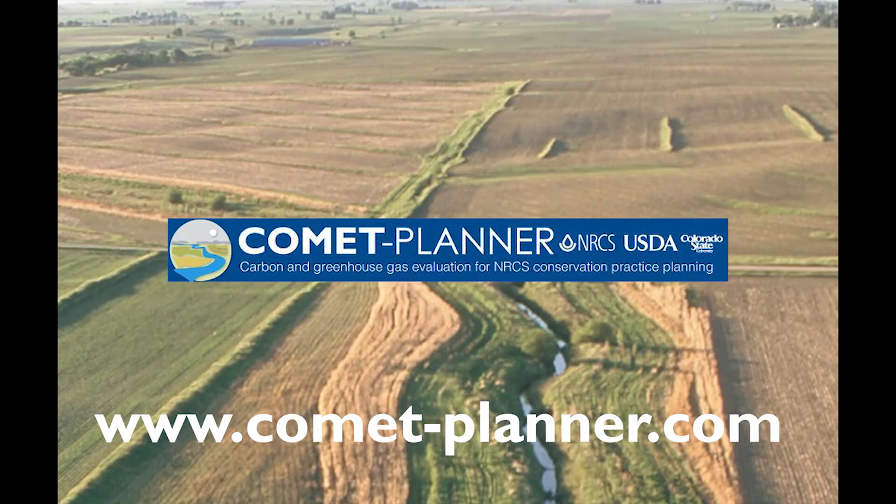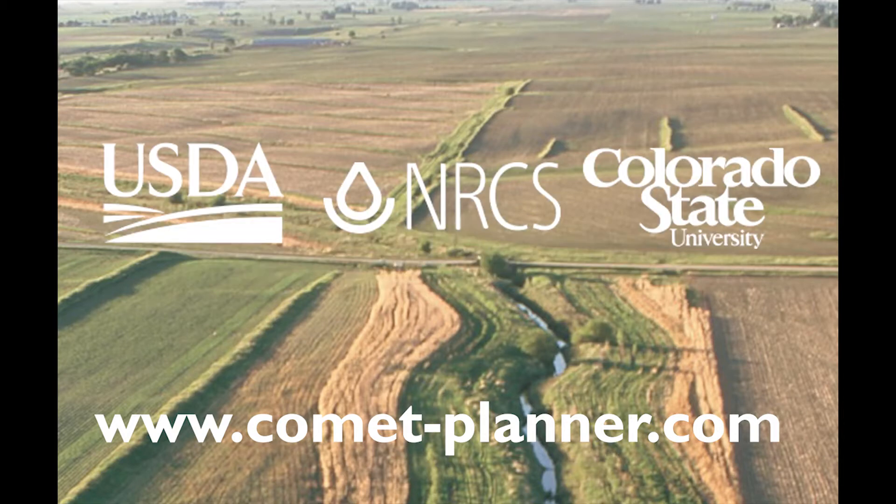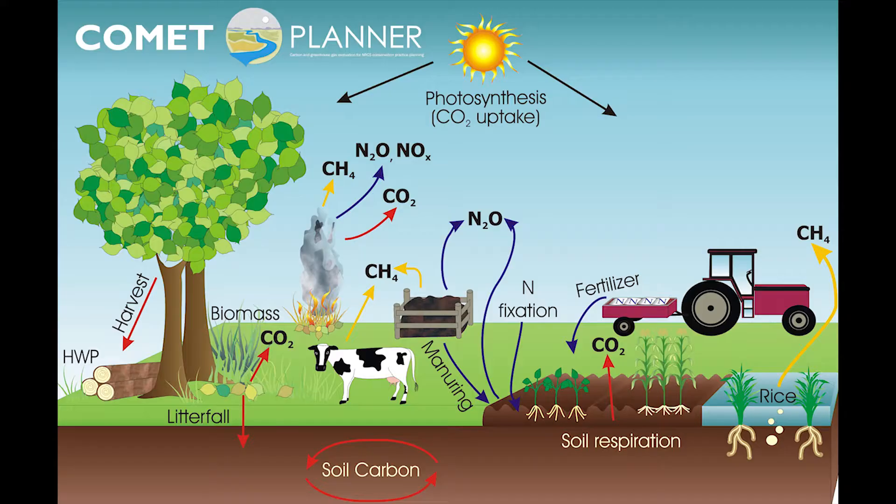Thank you for your interest in Comet Planner. Comet Planner is a web-based tool designed to provide approximate greenhouse gas mitigation potentials of implementing NRCS conservation practice standards. While conservation strategies currently consider a range of environmental, agronomic, and economic benefits, Comet Planner allows users to additionally explore potential climate benefits through enhancing carbon sequestration or reducing greenhouse gas emissions.